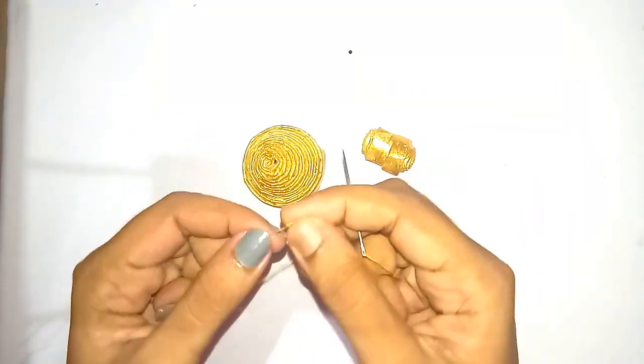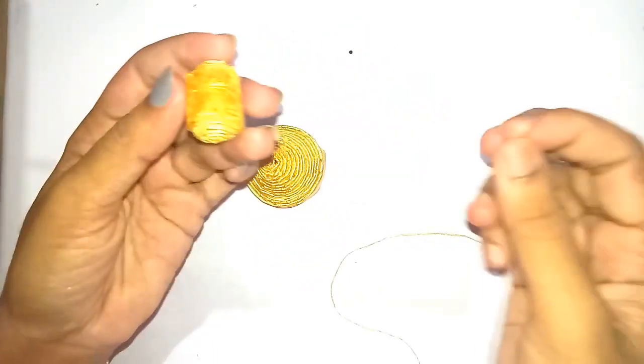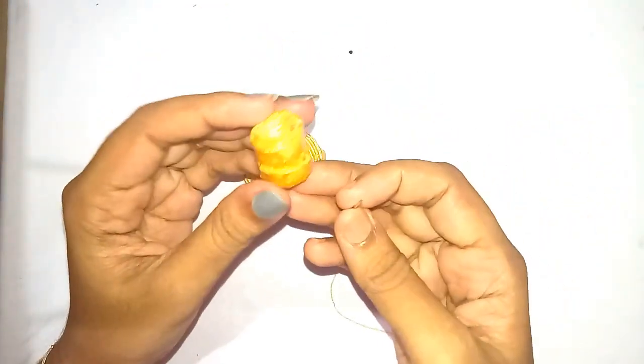Using a needle and the thread, we'll fix the center part of the bell. Insert the needle through this paper roll.